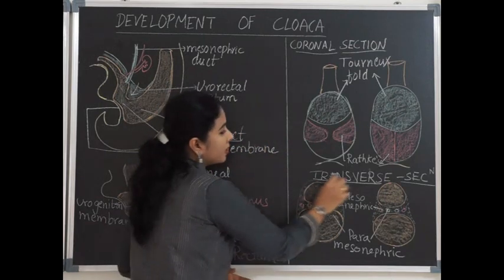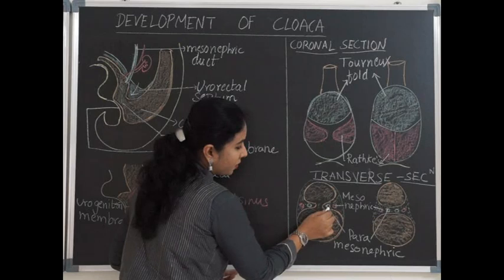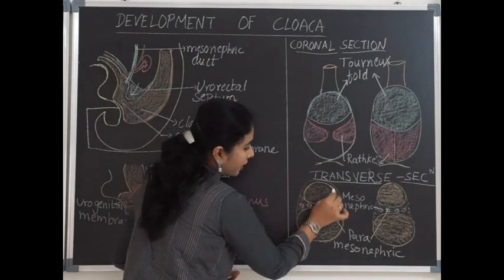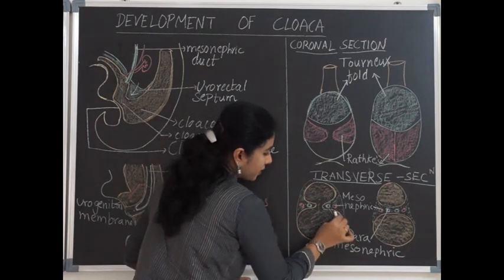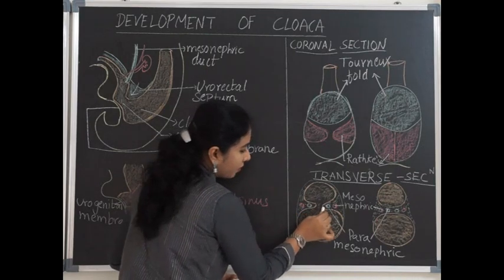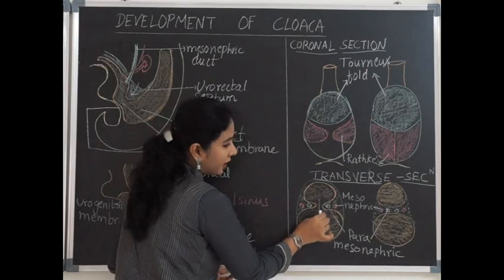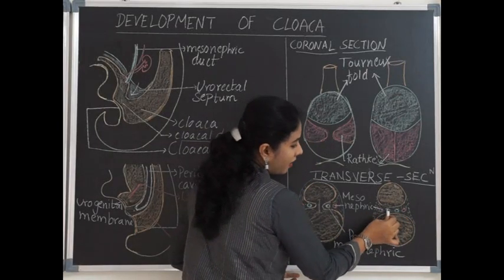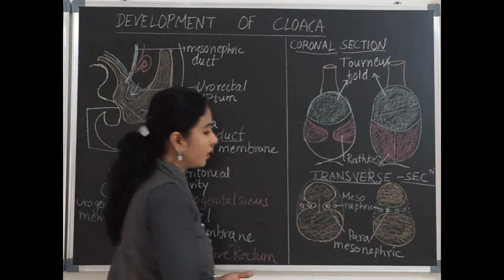In transverse section, the anterior part is called the urogenital sinus and the posterior part is called the primitive rectum, with the urorectal septum in between. The temporary communication is the cloacal duct, which completely disappears after the urorectal septum fuses down till the cloacal membrane.